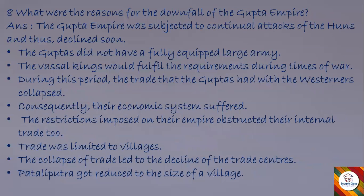Question eight: what were the reasons for the downfall of the Gupta Empire? Answer: The Gupta Empire was subjected to continual attacks by the Huns and thus declined. The Guptas did not have a fully equipped large army; vassal kings would fulfill requirements during times of war. The trade that the Guptas had with the westerners collapsed, and their economic system suffered. Restrictions on their empire obstructed internal trade too, limiting trade to villages. The collapse of trade led to the decline of trade centers, and Pataliputra was reduced to the size of a village.